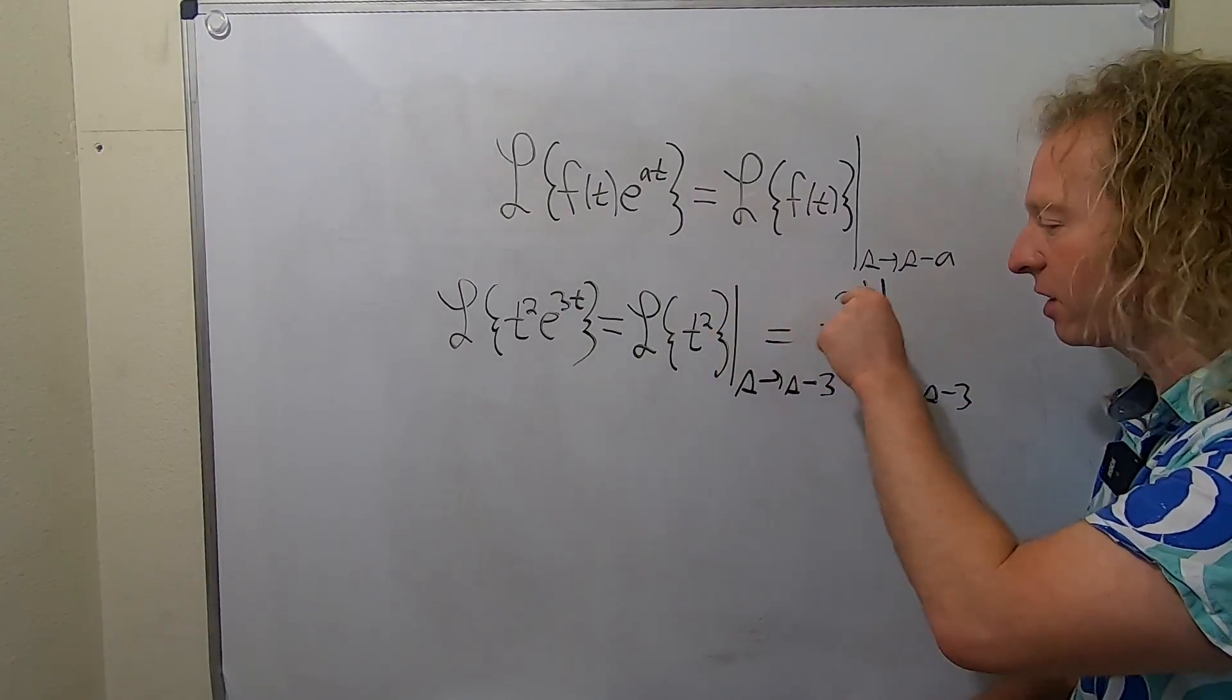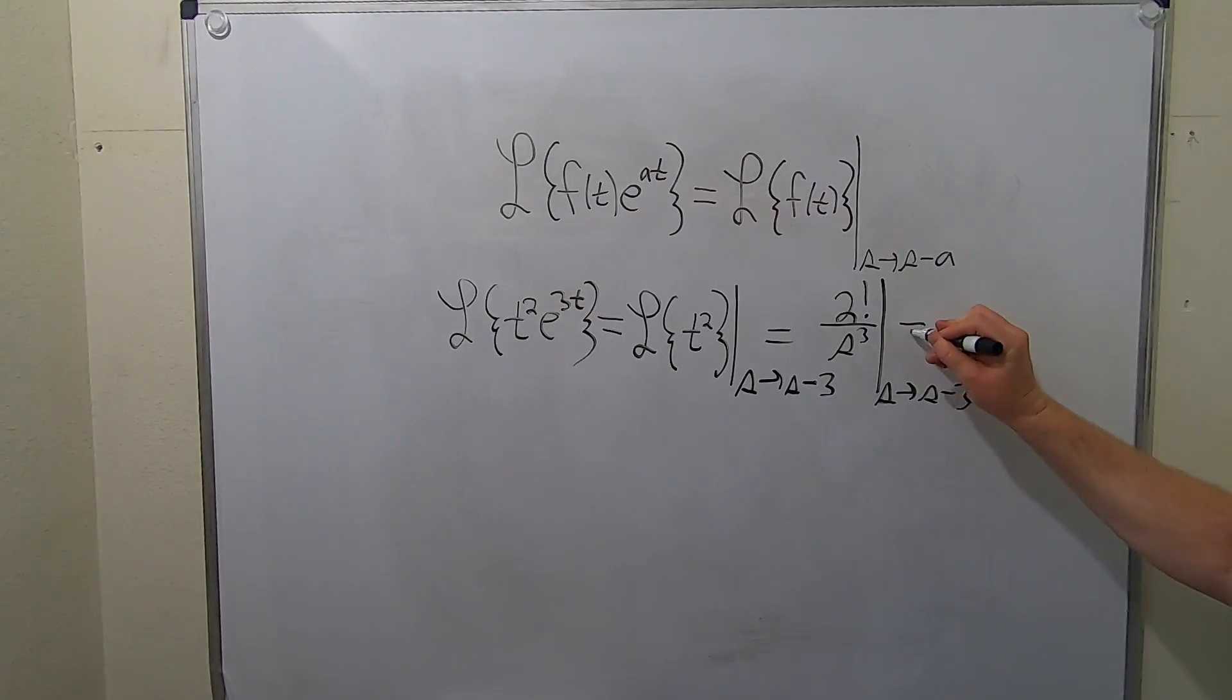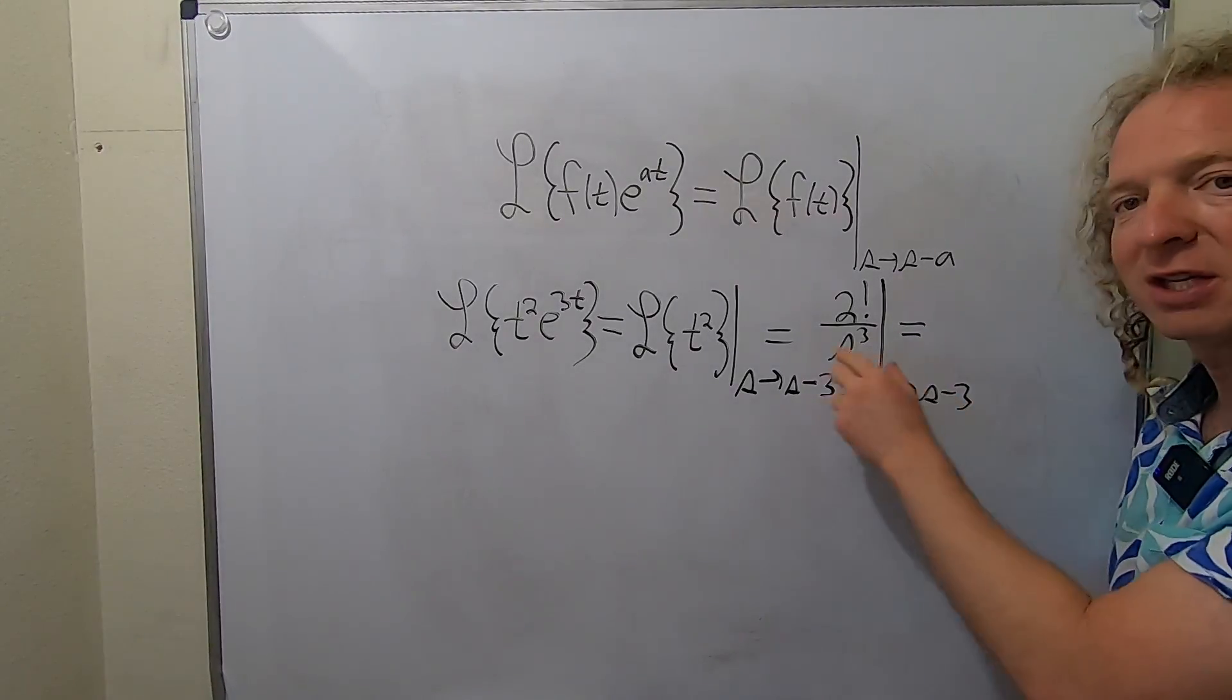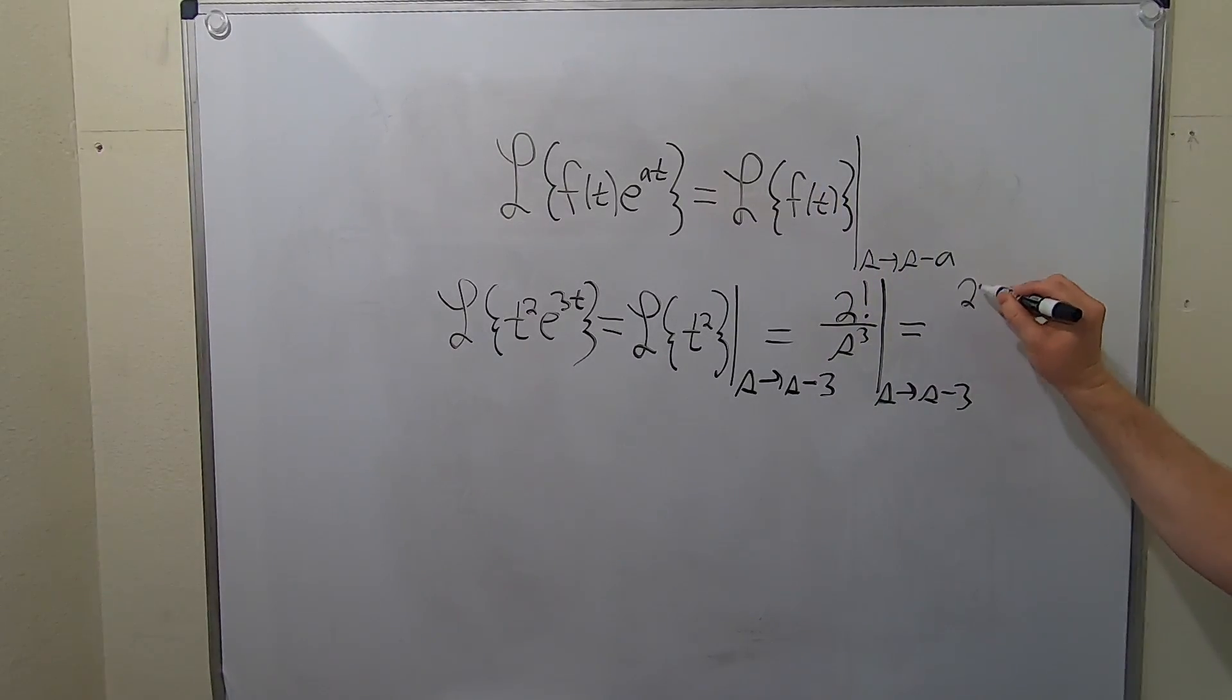Again, it's always whatever is here factorial and it's always s and it's one higher on the bottom. The last thing to do here is replace the s with s minus 3, and we have effectively used our shifting powers. So 2 factorial is 2, whoops, over s minus 3 cubed. And so that, my friends, would be the answer to the question.